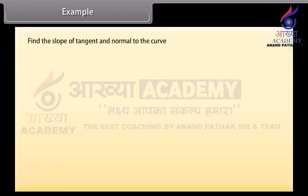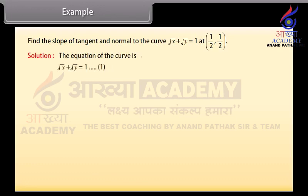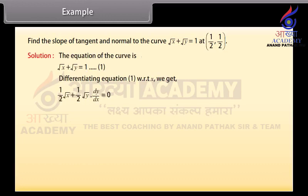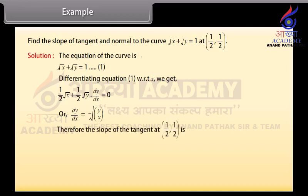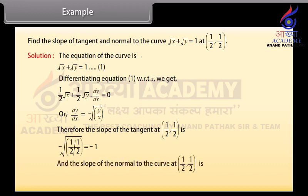Example: Find the slope of tangent and normal to the curve sqrt(x) plus sqrt(y) equals 1 at (1/2, 1/2). Solution: Differentiating with respect to x, we get 1/(2*sqrt(x)) plus 1/(2*sqrt(y)) times dy/dx equals 0, so dy/dx equals minus sqrt(y/x). Therefore the slope of the tangent at (1/2, 1/2) is minus sqrt(1/2 divided by 1/2) which equals minus 1. The slope of the normal at (1/2, 1/2) is minus 1 divided by minus 1, which equals 1.